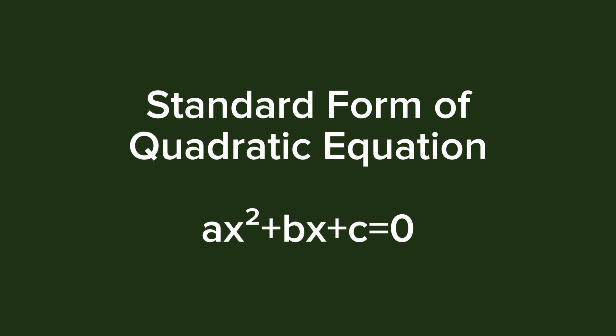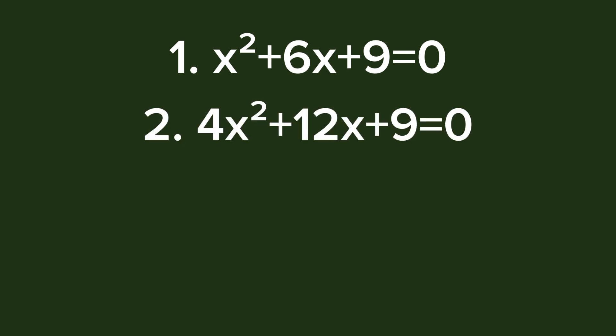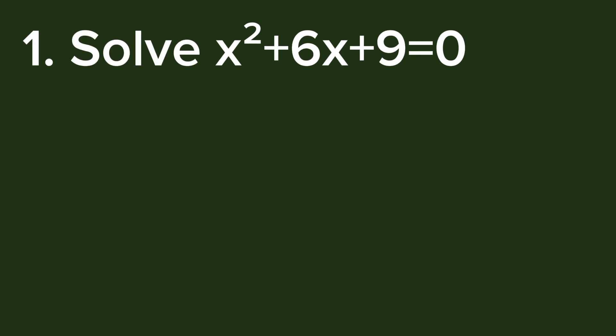We will solve equations like this by factoring. I would like to begin with the ones having perfect square trinomials. For example, x² + 6x + 9 = 0, and another one: 4x² + 12x + 9 = 0. These are two quadratic equations having perfect square trinomials on the left side.